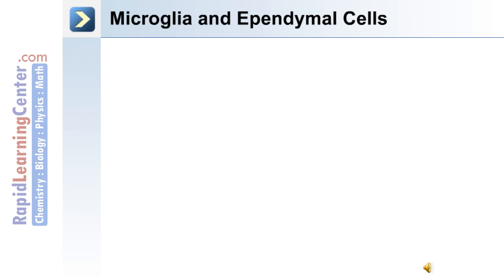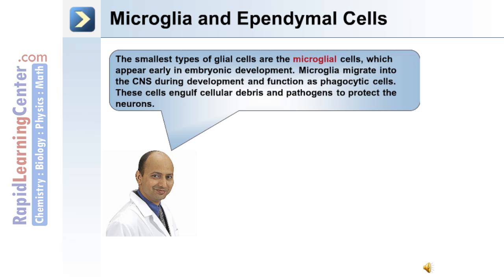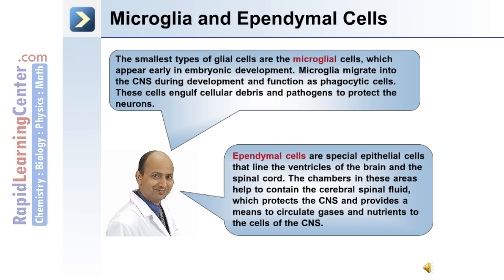The other types of glial cells in the central nervous system are microglia and ependymal cells. The smallest type are the microglial cells, which appear early in embryonic development. They migrate into the central nervous system during development and function as phagocytic cells, engulfing cellular debris and pathogens to protect the neurons. Ependymal cells are special epithelial cells that line the ventricles of the brain and spinal cord, helping to contain the cerebrospinal fluid, which protects the CNS and provides a means to circulate gases and nutrients.